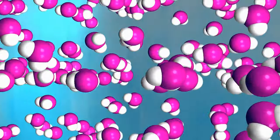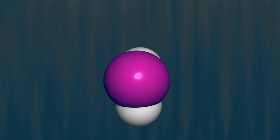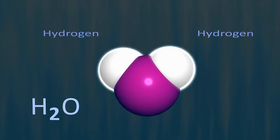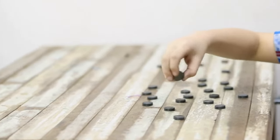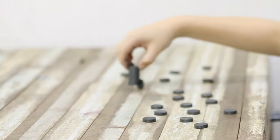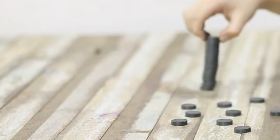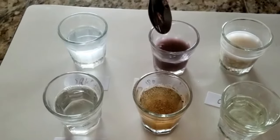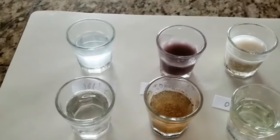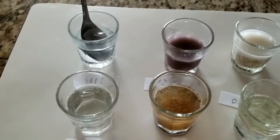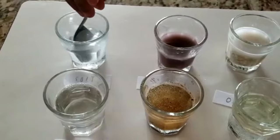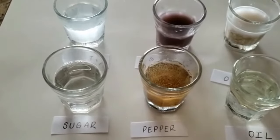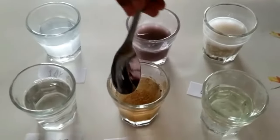Water molecules are made of polar bonds, meaning they each have a slightly positive end and a slightly negative end. Similar to the way magnets attract other magnets, the positive end of one polar molecule attracts the negative end of another. When salt is added to water, the positive part of the water molecule attracts the negative part of the salt, while the negative part attracts the positive part of the salt. This is why water will dissolve anything that is polar or carries a charge like salt, but it won't dissolve something made of non-polar bonds like olive oil.